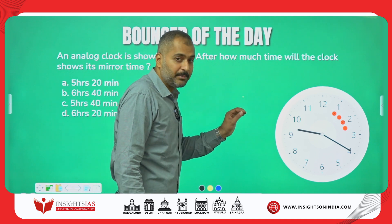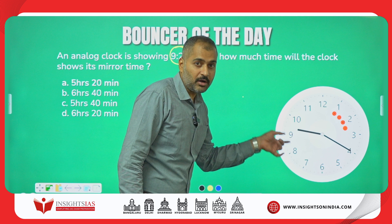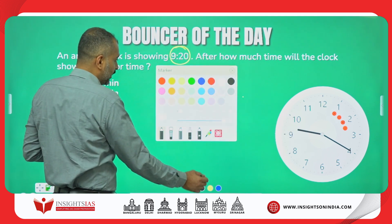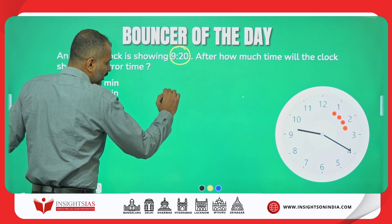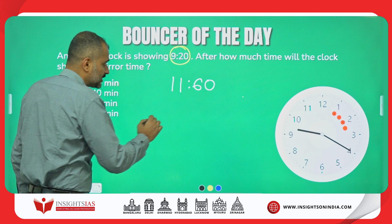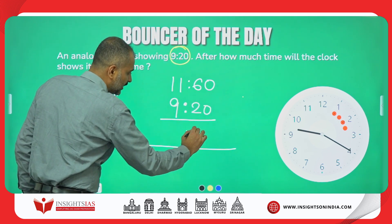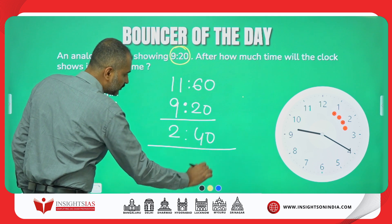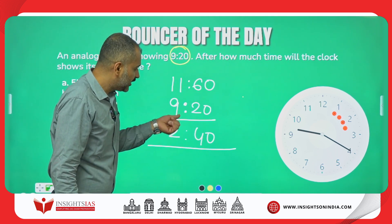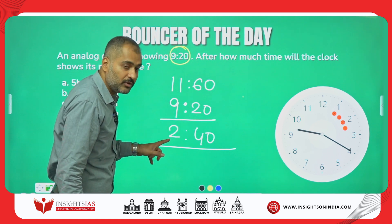When you see it in the mirror, what is the time it is going to show? Rather than rotating the clock and doing some hypothetical techniques to solve this question, I will show you a unique technique where you just subtract 9:20 from 11:60. It will automatically show you the answer — this is 2:40, which is the mirror time you are going to see when the time is 9:20.